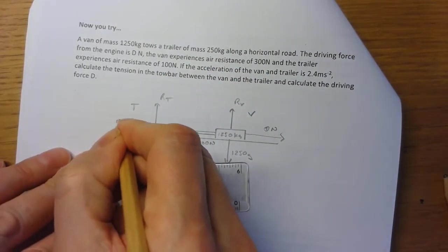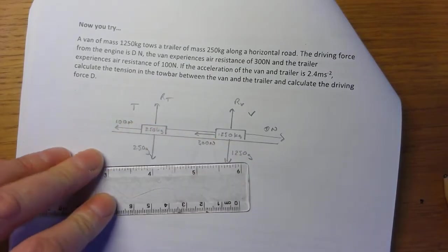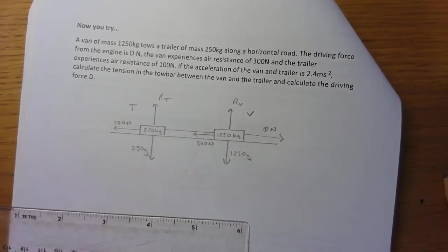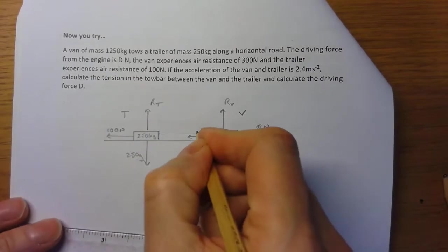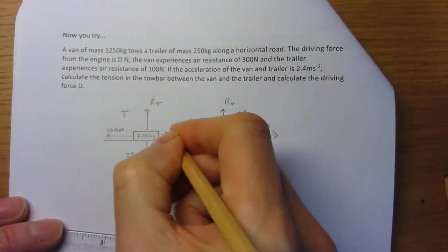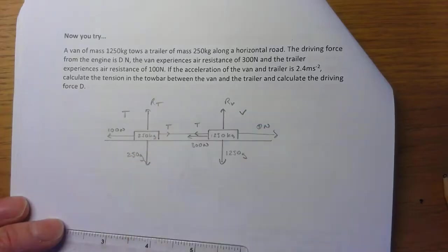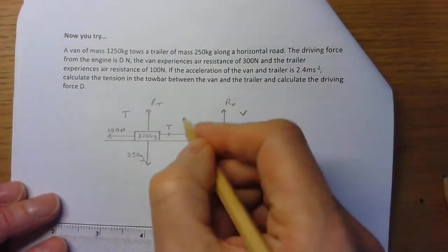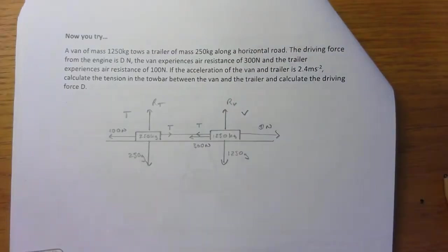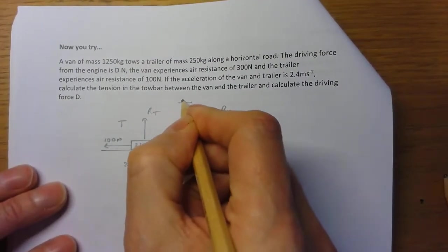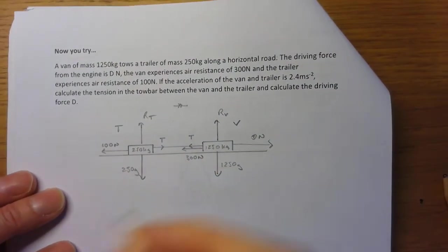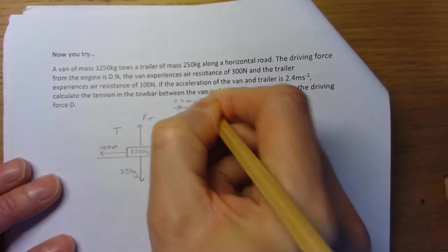Maybe this question should be stating there's no friction, but I think we can assume that because it's not mentioning it. Okay, so I have a tension pulling backwards on the van and I have a tension pulling forwards on the trailer. So these are the forces acting on the van; these are the forces acting on the trailer. I can either take the van and resolve forces, or I can deal with it as a complete system.